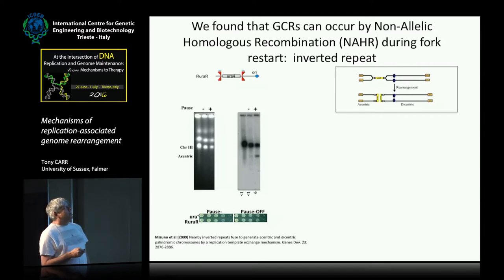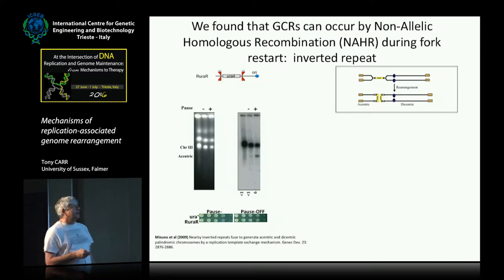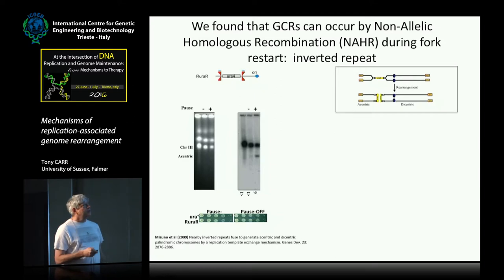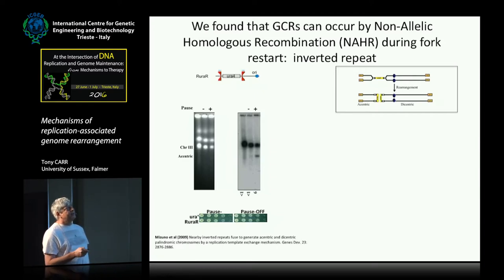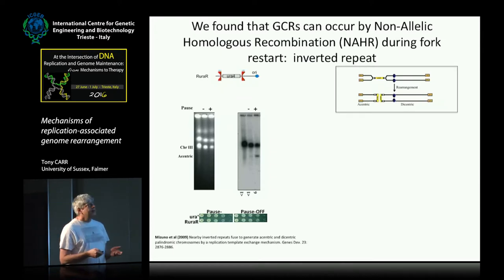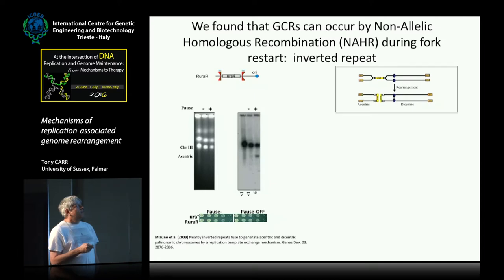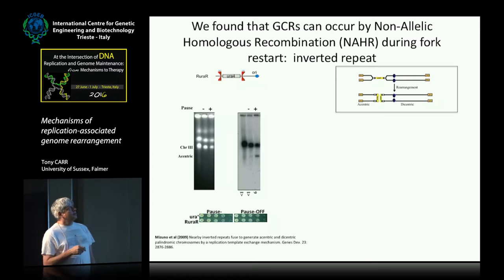One thing we noticed was we generated chromosomal rearrangements which resulted in eccentric and dicentric chromosomes, at fairly low frequency — they don't affect the overall growth rate of the culture. But obviously, if you take a haploid organism and disrupt one of its chromosomes into a dicentric and an eccentric, that particular cell is going to be dead. That was occurring about one in 40 to 50 times that cells replicated through this region by homologous recombination.